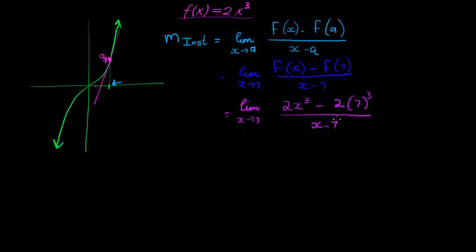Before I actually get to there, let's rather simplify it from here. Before I do that, let's say we take out a 2 as a common factor, x to the power of 7, we take out 2 as a common factor, and that gives us 2x cubed minus 7 cubed divided by x minus 7.